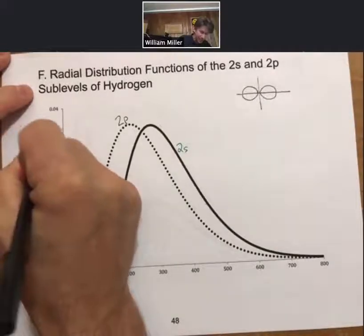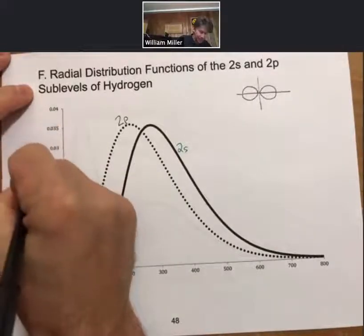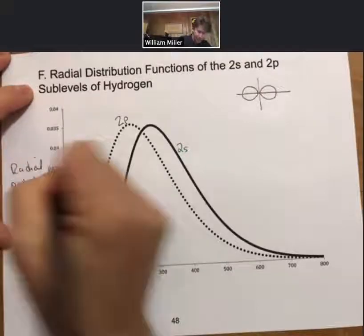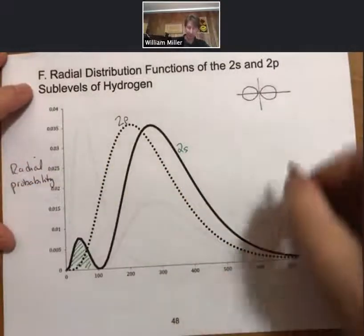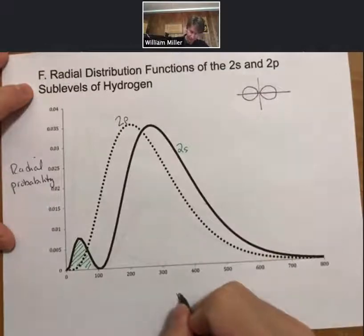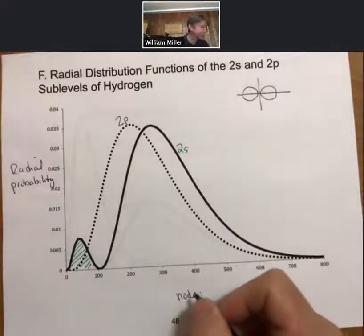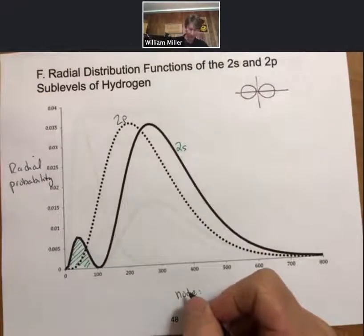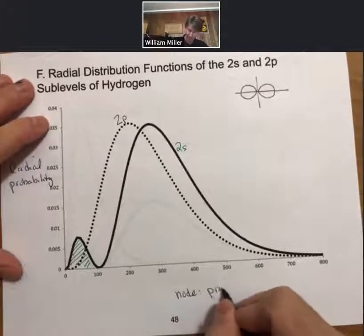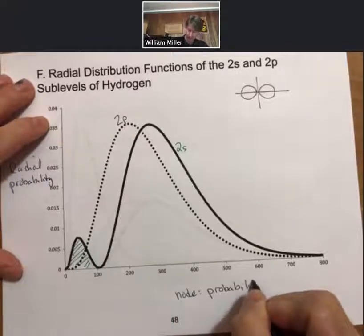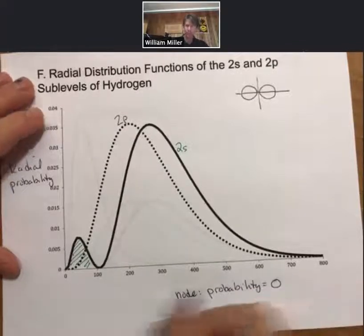This time it's the radial probability, where the probability equals 0. So node, and I think I even wrote this on one of them, node probability equals 0.